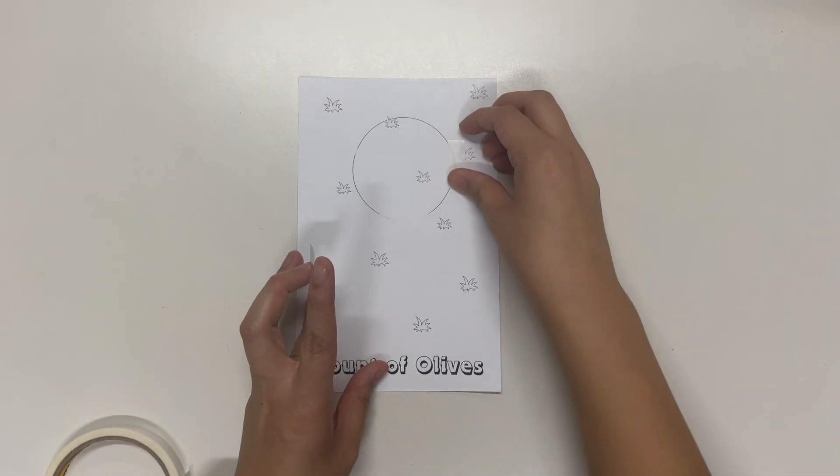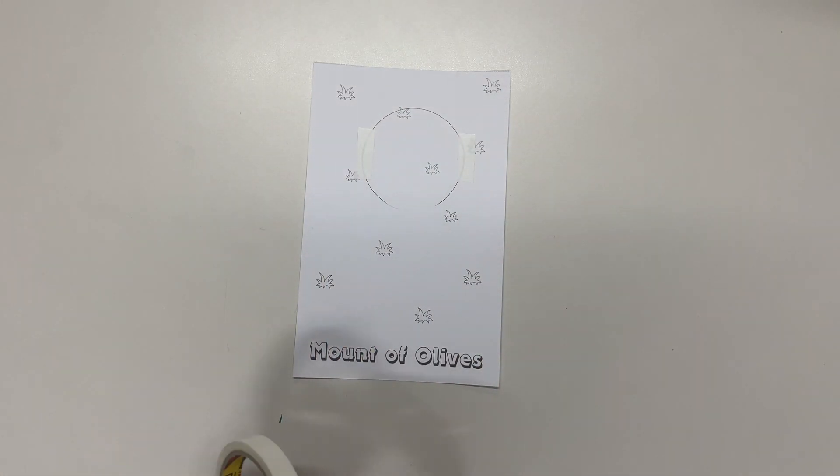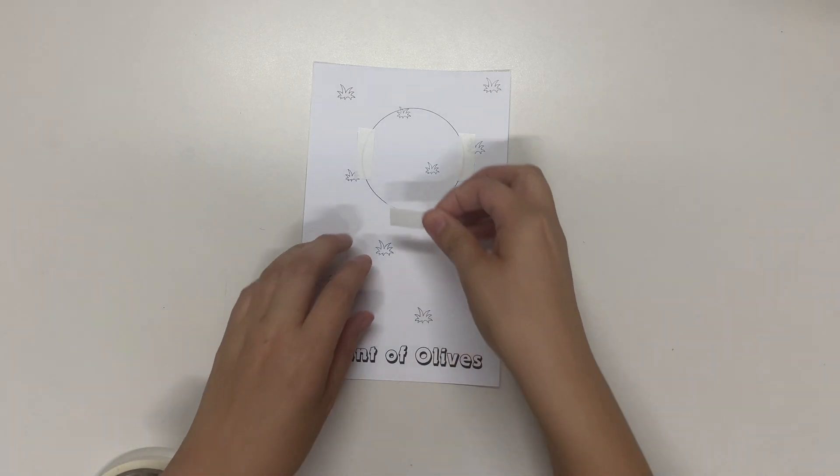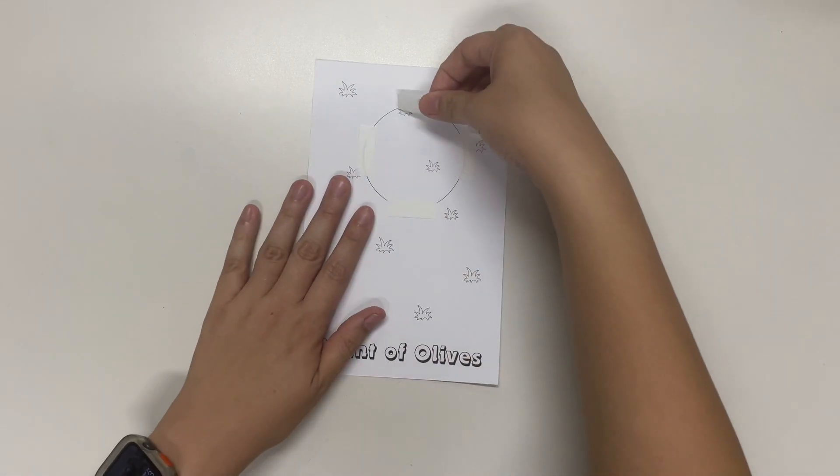So what we want to do is we want to put four pieces of double-sided tape on the north, south, west, and east part of the circle. This is so that we know when the kids stick on their mountain on top of this circle, it's going to be secured by the double-sided tape.